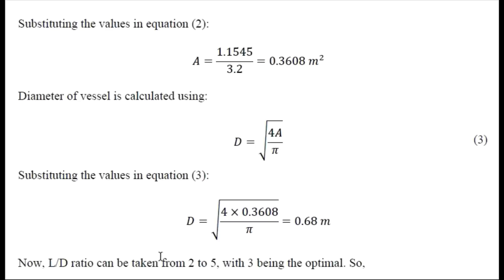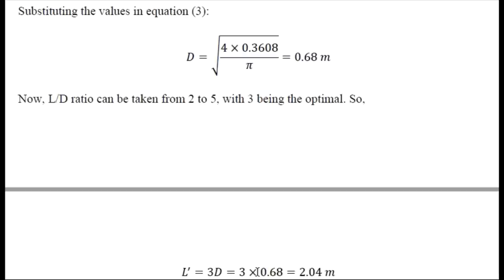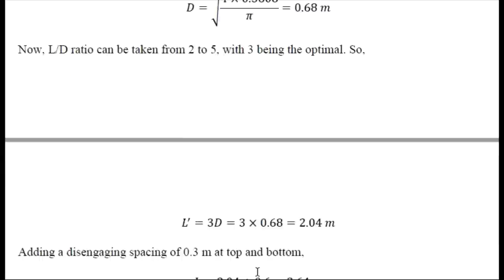Now to calculate the height or length of the separator, we know that L by D ratio is 2 to 5 with 3 being optimal. So we will be using 3 as L by D ratio. Using this we can find the height of the separator as 2.04 meter.